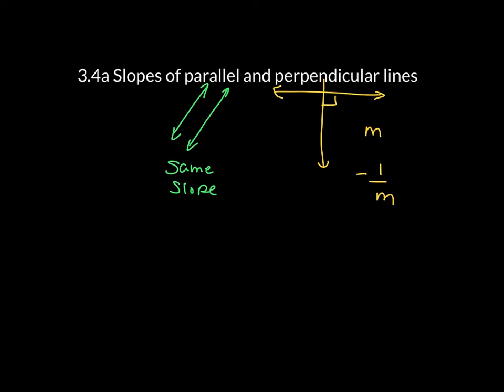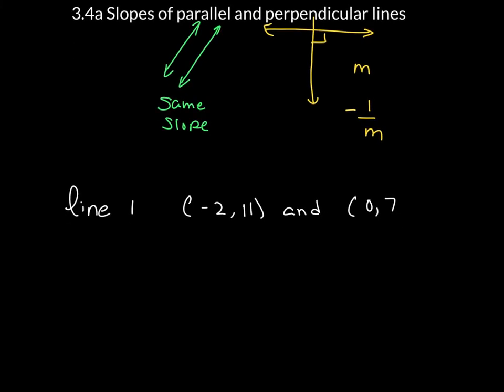So let's go ahead and look at two cases. Let's say I have line 1, and it goes through points negative 2, 11, and 0, 7. And then I have line 2, and that line goes through negative 4, 12, and through negative 2, 8.